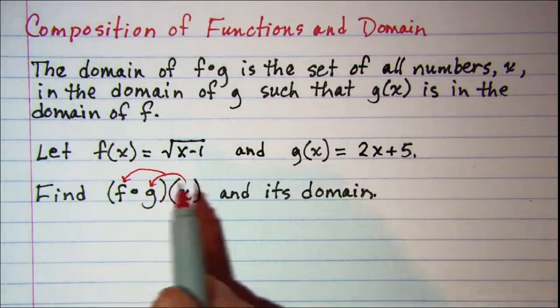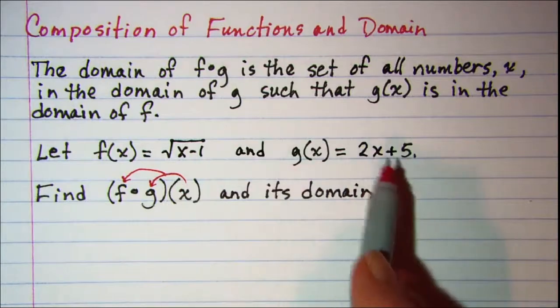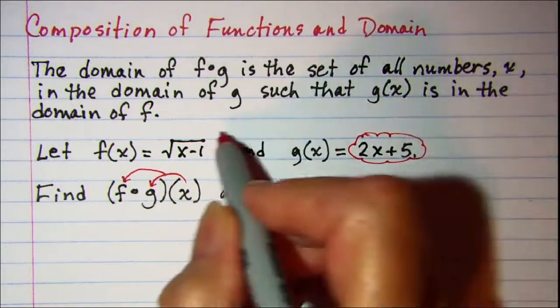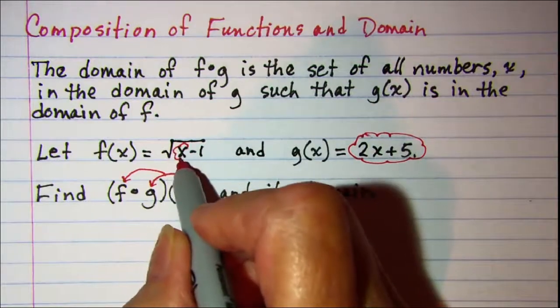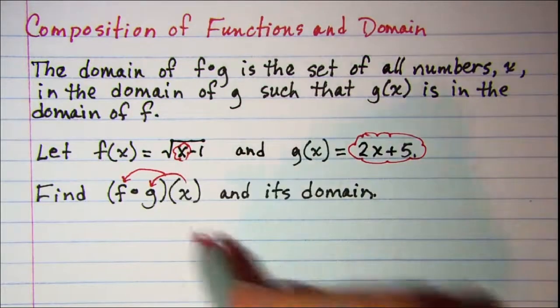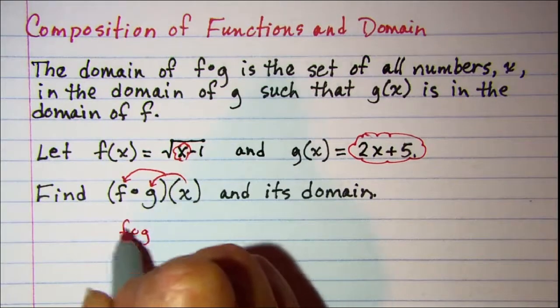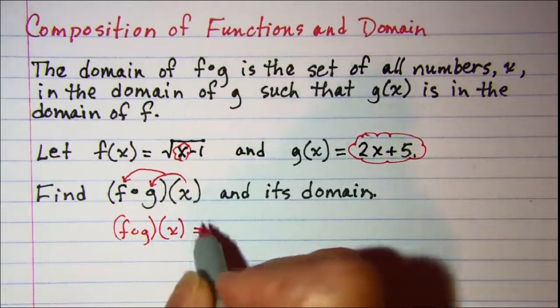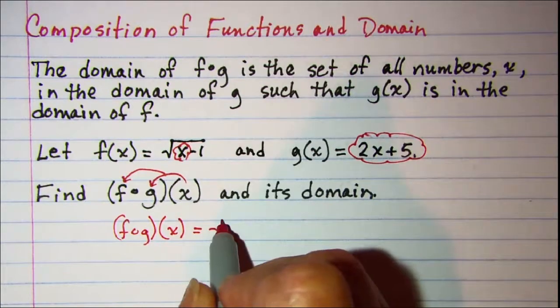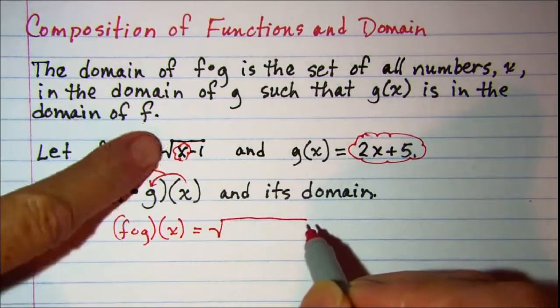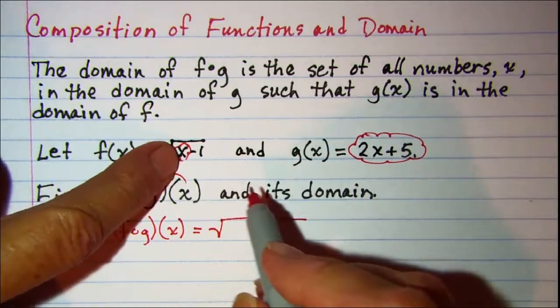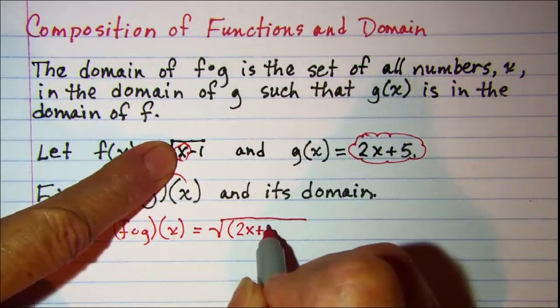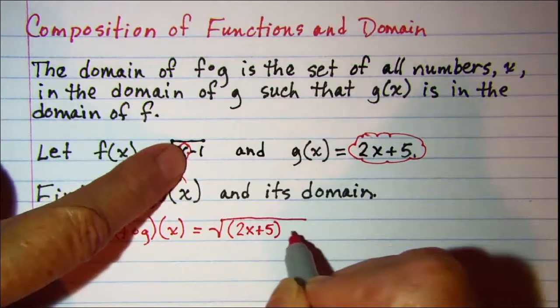So then once we put this into f(x) we'll have f composition g of x is equal to the square root of, and then in place of x we'll put 2x plus 5 and then subtract 1.